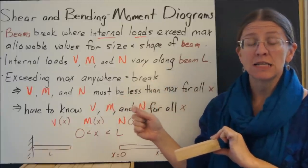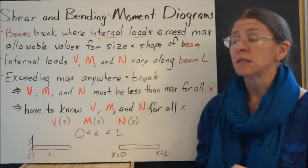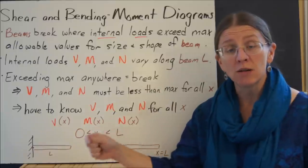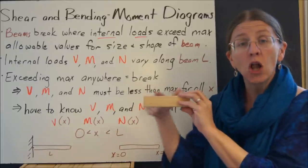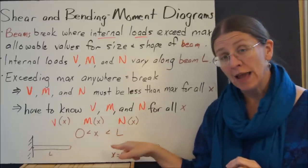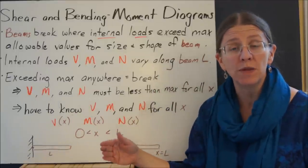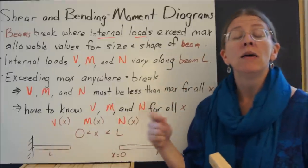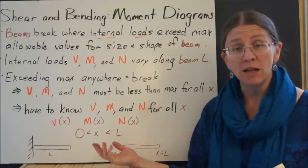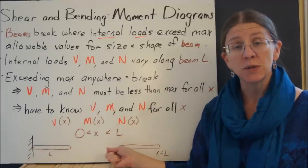Thus, each of my internal loads has to be below the max at every point on the beam. What I need to know to determine whether or not my beam will break is what these values are for the internal loads at every point along the beam, everywhere for all x. So I'm going to get V(x), M(x), and N(x) for all x and plot them.